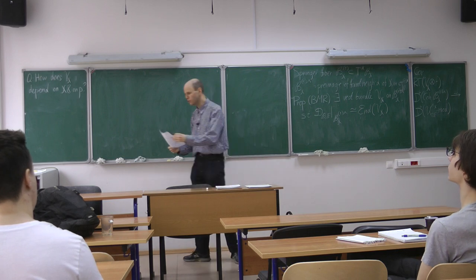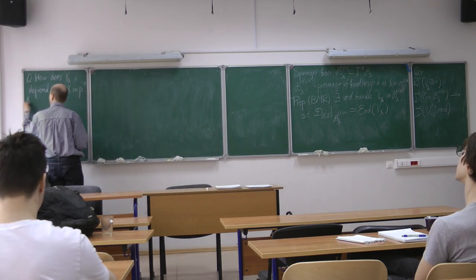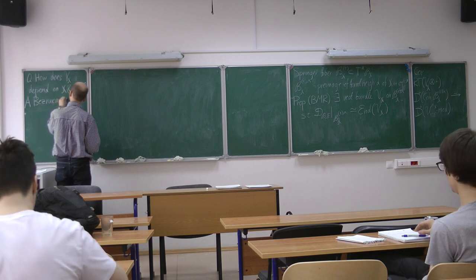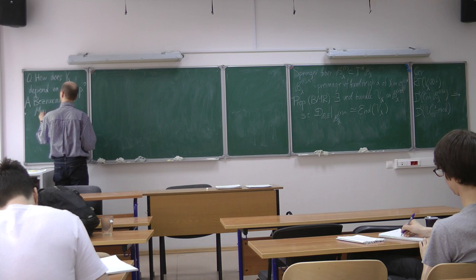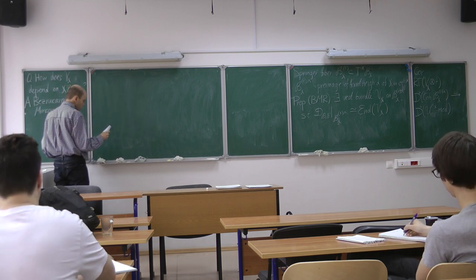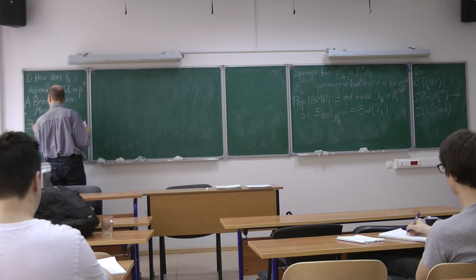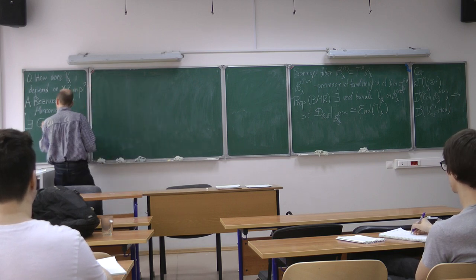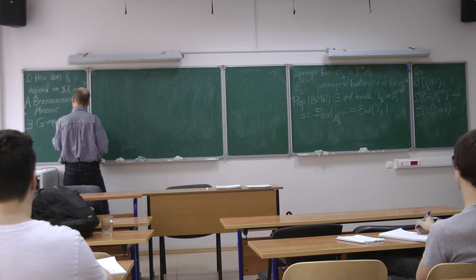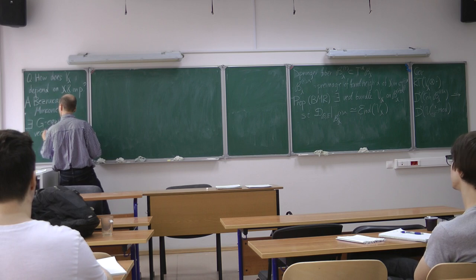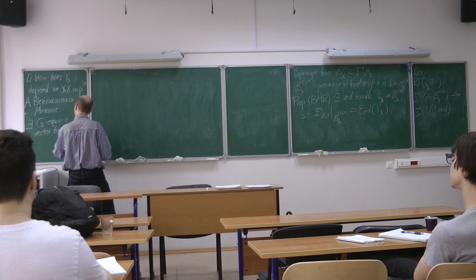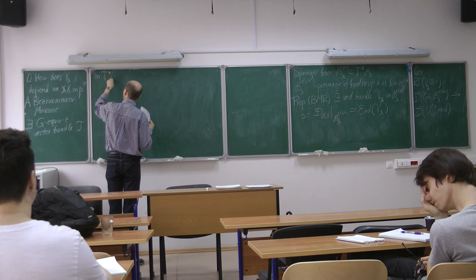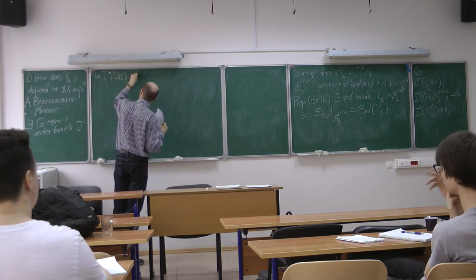And, the answer is due to Bezrukavnikov and Mirkovic. And, what they say is the following. So, there is a G equivariant vector bundle. This is O, on T star G mod B, which has the following properties.